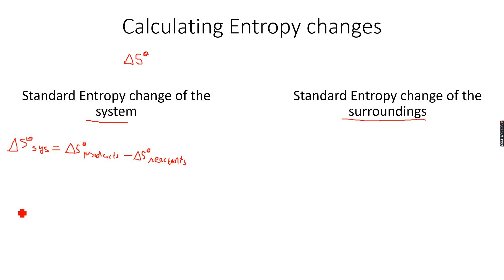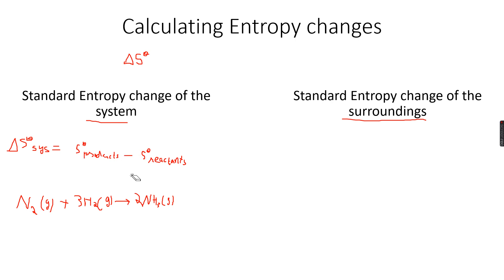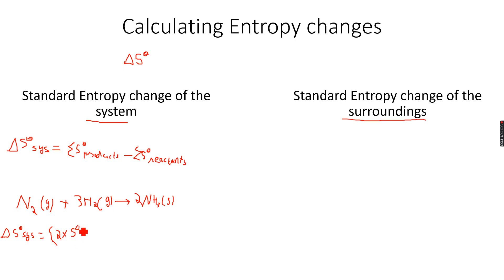This is the entropy change of a system. Taking the Haber process example again: N2 plus 3H2 gas gives 2NH3 gas. The formula is Delta S naught system equals the sum of the standard entropies of the products minus the sum of the standard entropies of the reactants. So Delta S naught system equals 2 times the standard entropy of NH3, since we multiply by stoichiometric coefficients.